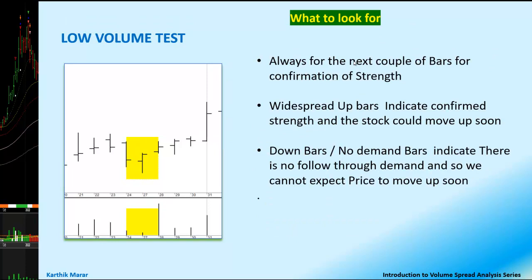What do we look for when we see a Test for Supply? We always look at the next couple of bars for confirmation of strength. If we see widespread up bars, it indicates strength and the stock could move up soon. But if we see down bars or no demand bars, it indicates there is no follow-through demand, so we cannot expect prices to move up soon. It is a good Sign of Strength and one can prepare for an upcoming up move, looking for proper entry points for a long trade.